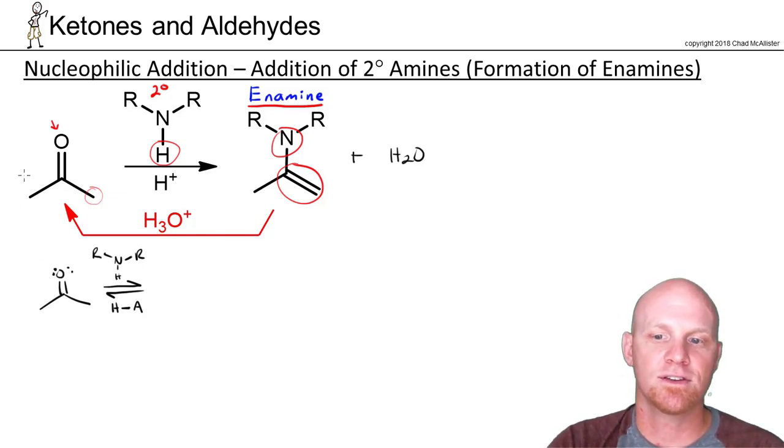So first step, again amines are decent nucleophiles, and so the first step is going to involve the nucleophilic attack. We'll come and attack our ketone, kick the pi electrons up to the oxygen.